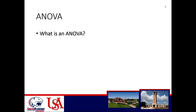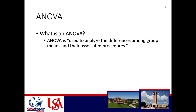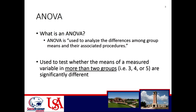So what is an ANOVA and why do we care about it? Why don't we just use t-tests and chi-square for everything? The textbook definition is that an ANOVA is used to analyze the differences among group means and their associated procedures. How an ANOVA differs from a t-test is that a t-test looks at the difference between two groups, whereas an ANOVA is used to test whether the means of a measured variable in more than two groups are significantly different. For an ANOVA it's anything more than two groups — three, four, five, even twenty groups. T-test: one or two groups. ANOVA: more than two groups. Simple as that.